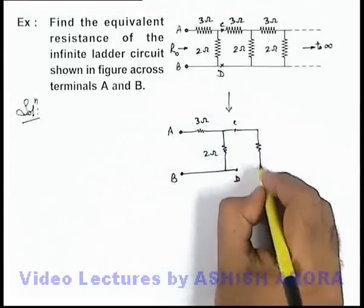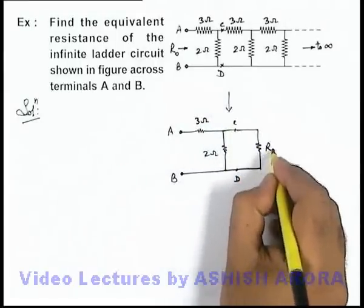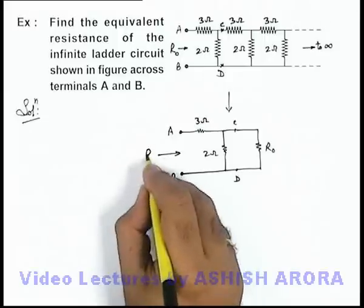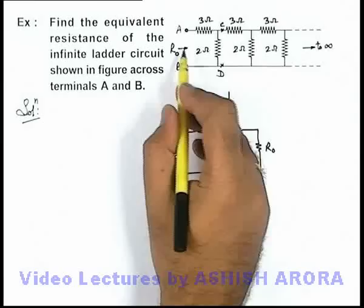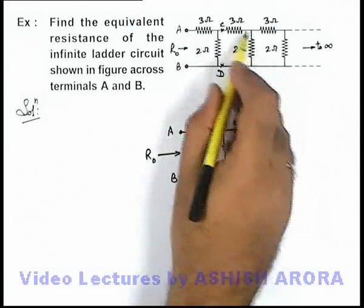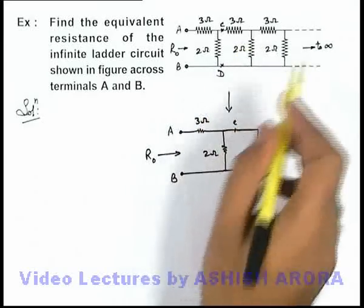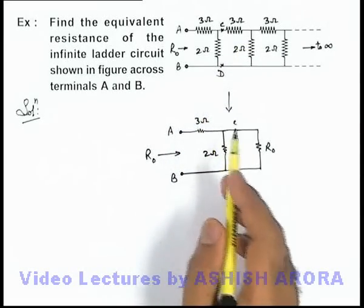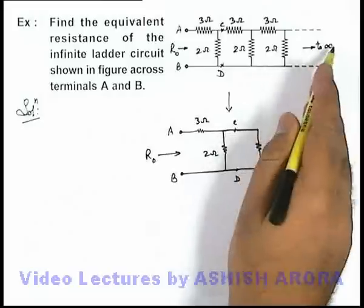We can replace the remaining circuit by the resistance R_not, and the equivalent of this will also be R_not because this is also the resistance of infinite sections of combinations of 3-ohm and 2-ohm resistances, and across C and D also there are infinite sections.